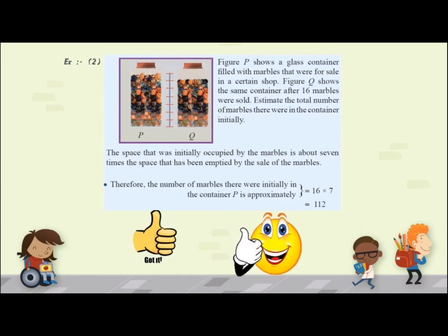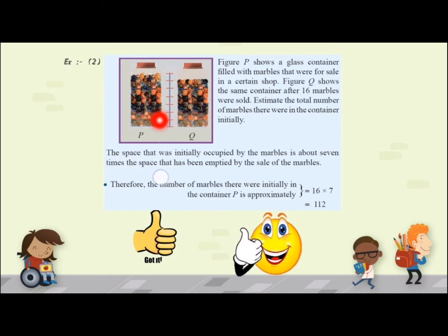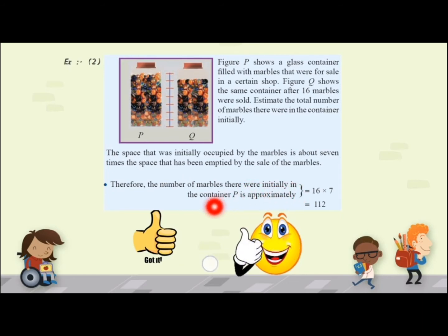Let's take another example. Figure P shows a container filled with marbles for sale in a certain shop. Figure Q shows the same container after 16 marbles were sold. Estimate the total number of marbles there were in the container initially. You can see the space initially occupied by the marbles is about seven times the space that has been emptied by the sale of the marbles — one, two, three, four, five, six, seven. Therefore, the number of marbles initially in container P is approximately 16 times 7, which is 112.